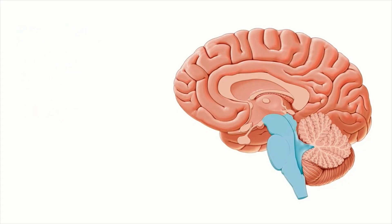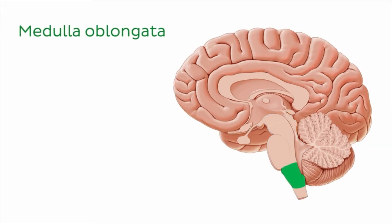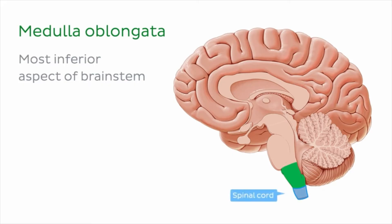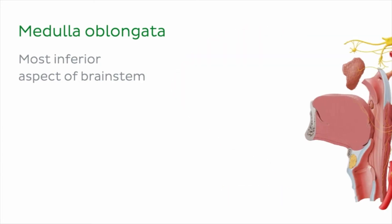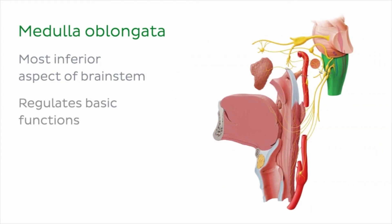Let's look at each part in a little more detail. The medulla oblongata, or sometimes just referred to as the medulla, is the most inferior aspect of the brainstem and is immediately superior to the spinal cord. The medulla is responsible for regulating some of life's most basic functions like breathing, dilating and constricting blood vessels, and swallowing.